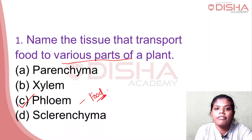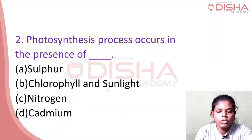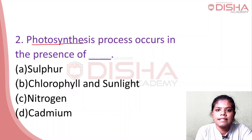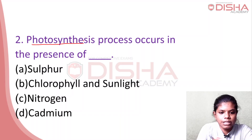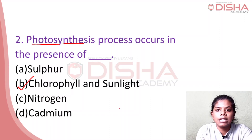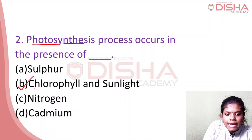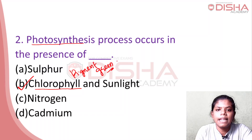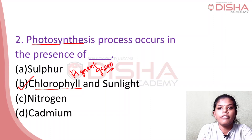What tissue is the phloem? Photosynthesis process occurs in the presence of chlorophyll and sunlight. Chlorophyll is the green pigment in our plants. The photosynthesis process occurs in the presence of chlorophyll and sunlight.